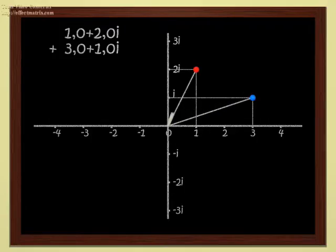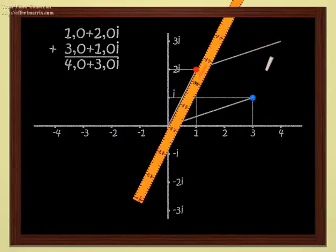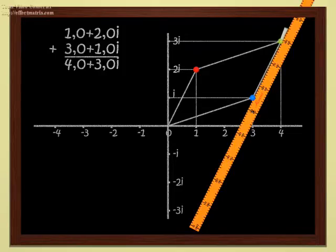Well, you add them just as schoolchildren do. That gives us 4 plus 3i. Geometrically, this is just addition of vectors. You see that it's no problem to add complex numbers.